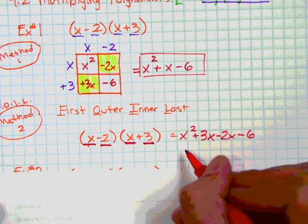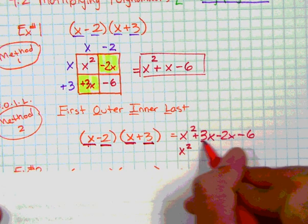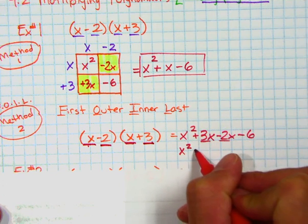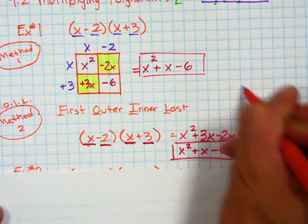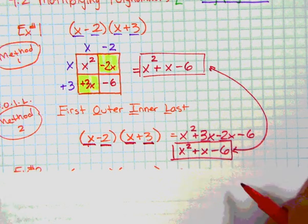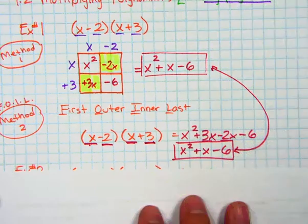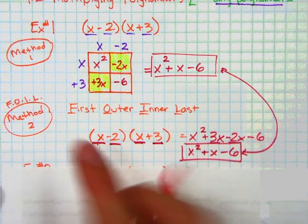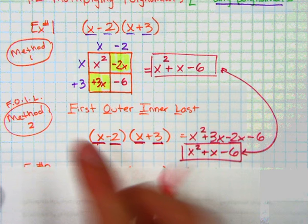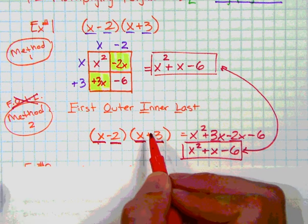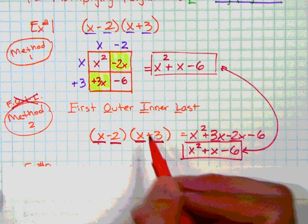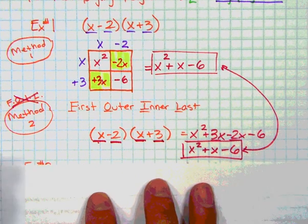Then you can see that x squared is by itself. These two are like terms. Combine them, you get your positive x and then your negative 6. And voila, you came up with the same exact answer as I did in the previous example. The reason I don't like FOIL is because it only works with a binomial times a binomial. It won't work for anything else. Forget it. I'm not going to memorize that. We're going to use area multiplication.